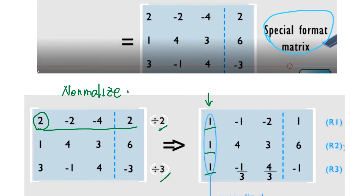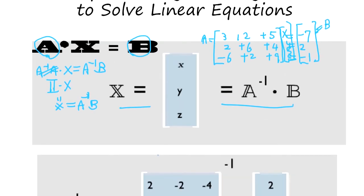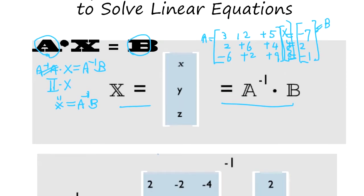The answer is not going to change when you divide whole things by the same number, just like when you have 3x plus 12y plus 5z equal minus 7. You divide by 3. The answer is the same.